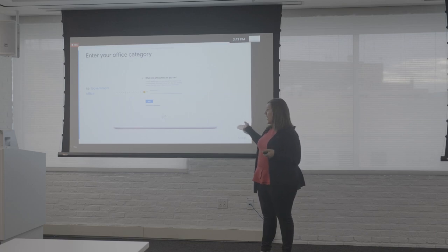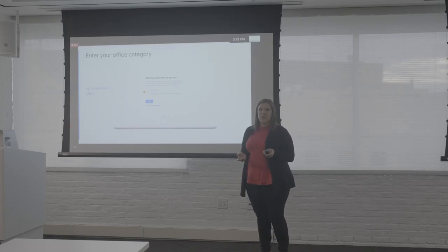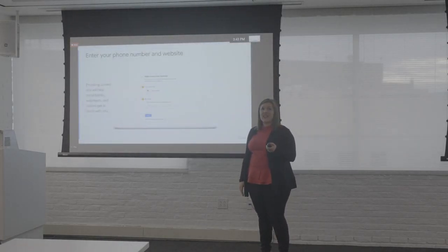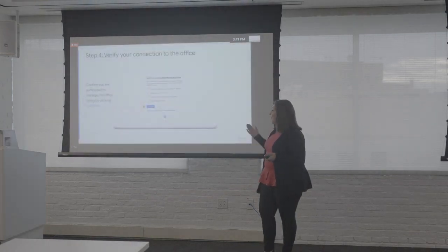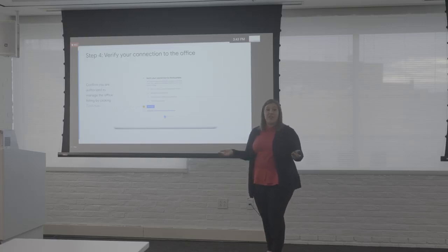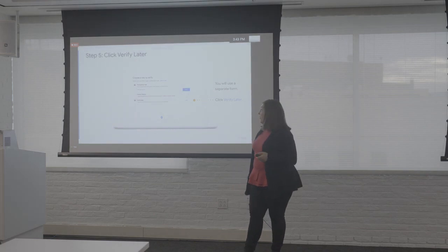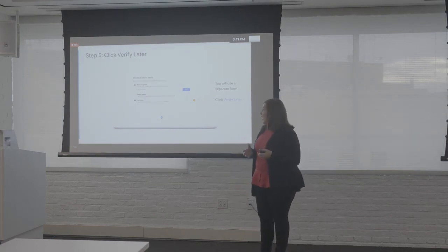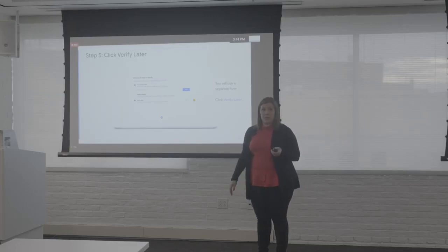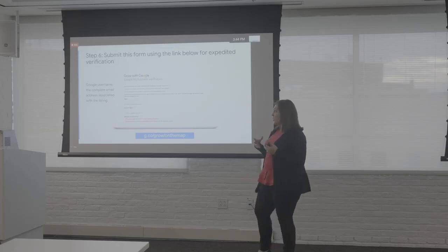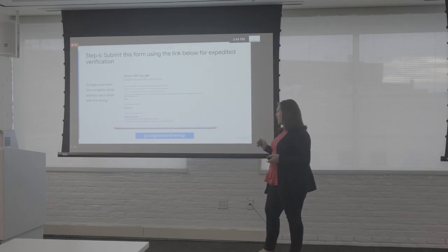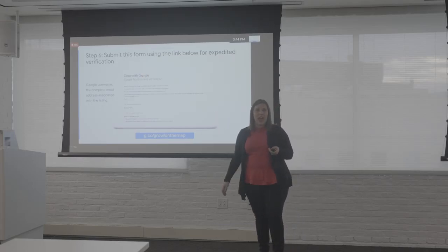Next, add an office category — for most it'll be 'Government Office' or 'Advocacy Group.' Then enter your phone number and website — the place where voters and constituents can get in touch. Next, verify your connection with the office — confirm you are an authorized member. Click 'Verify Later' and use a separate form for expedited verification as a political entity, at g.co/grow/onthemap, using your Google username, the completed email address associated with the listing.